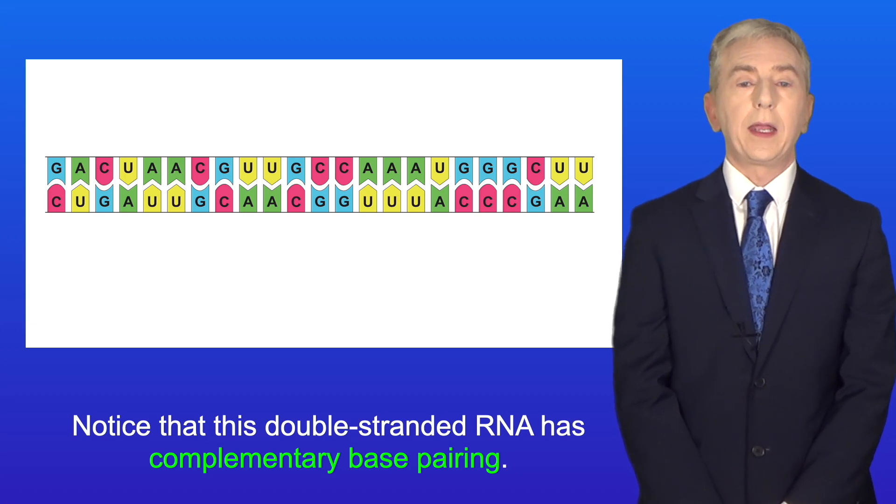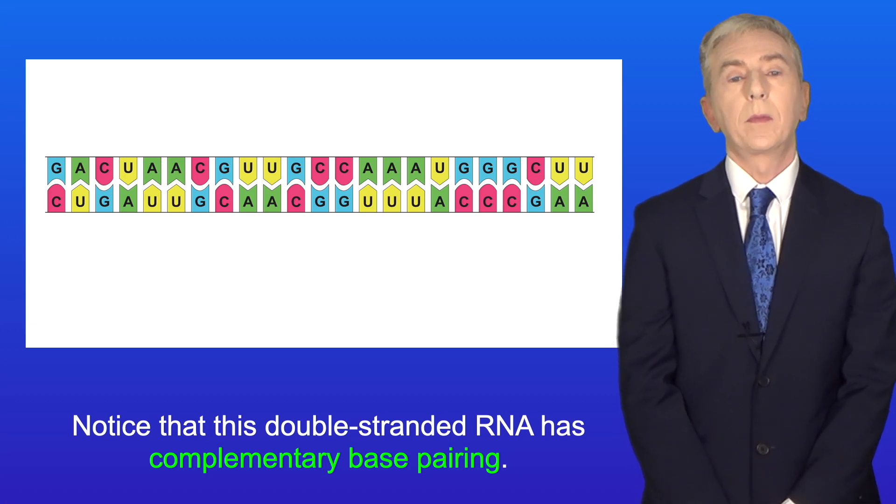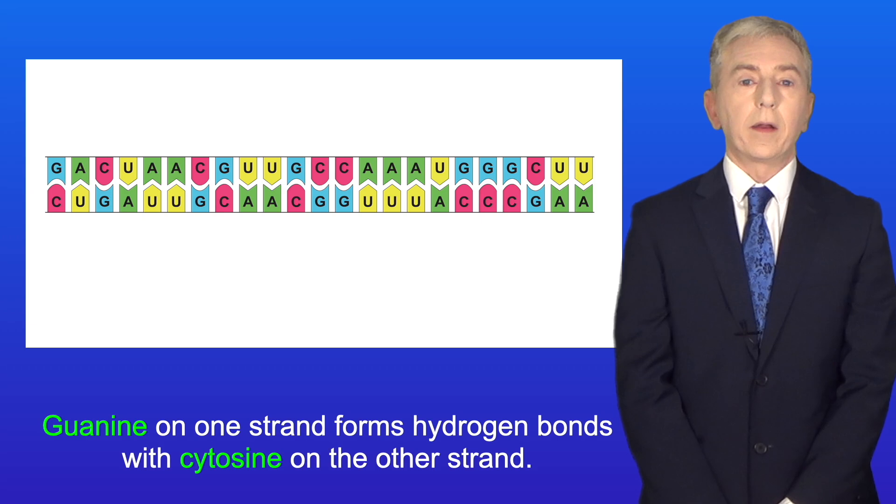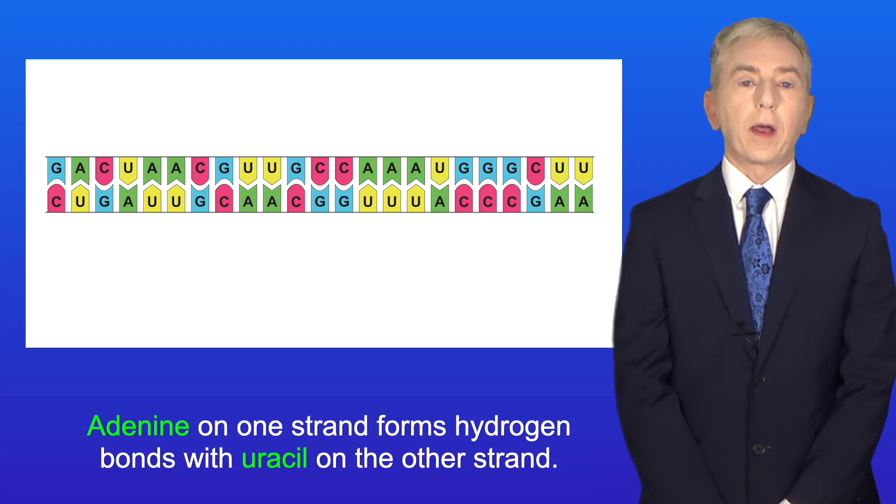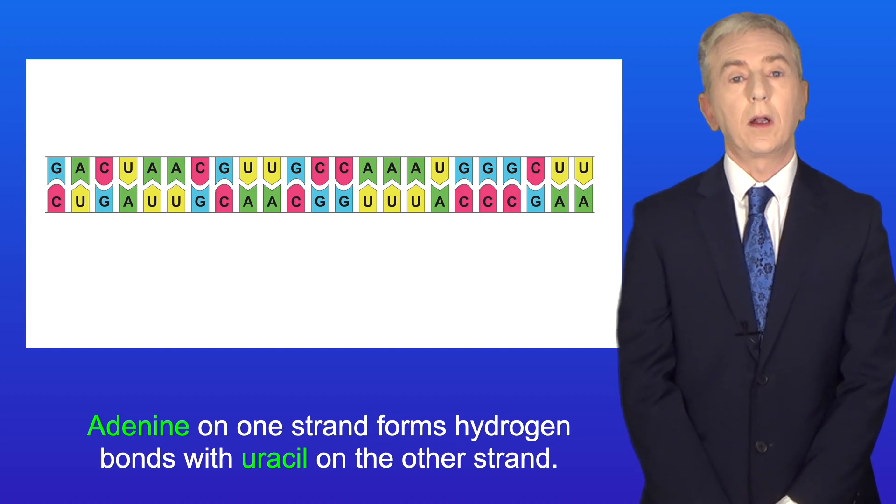Now notice that this double-stranded RNA has complementary base pairing. Guanine on one strand forms hydrogen bonds with cytosine on the other strand. And adenine on one strand forms hydrogen bonds with uracil on the other strand.